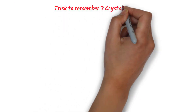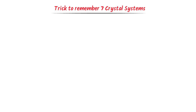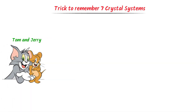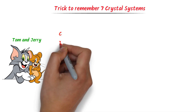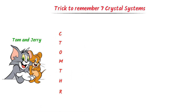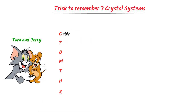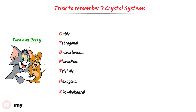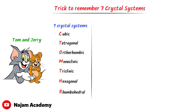What is the trick to remember seven crystal systems? I hope you have watched the famous cartoon series Tom and Jerry. I say: 'See Tom There.' C stands for cubic, T stands for tetragonal, O stands for orthorhombic, M stands for monoclinic, T stands for triclinic, H stands for hexagonal, and R stands for rhombohedral. These are the seven crystal systems.